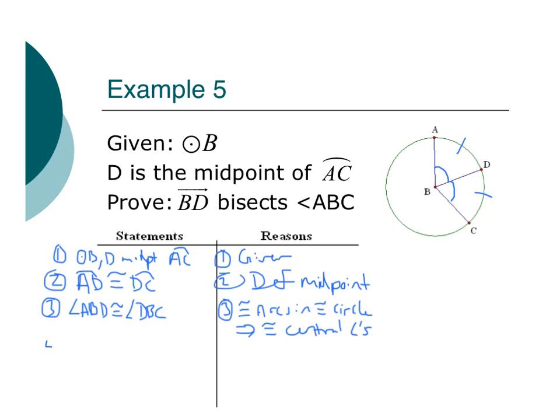Alright, last one. My prove. We know BD bisects angle ABC by the definition of bisect because what it does is it splits it into two congruent angles. Awesome.